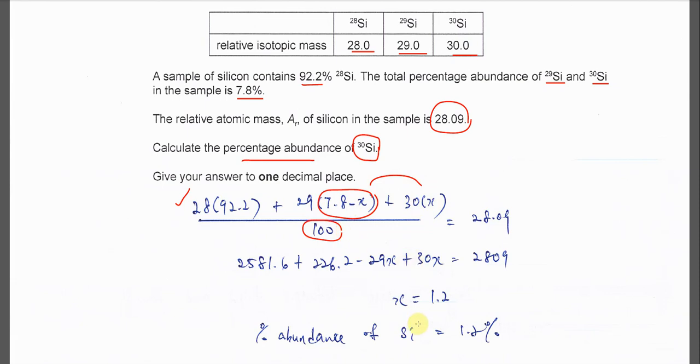And of course 30 times x over total relative abundance which is 100. Then you calculate x. X you should get 1.2, so we know that the percentage of abundance of silicon 30 is 1.2.